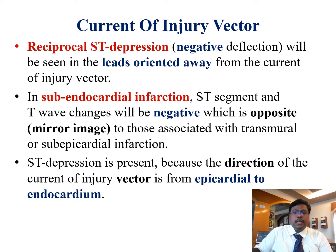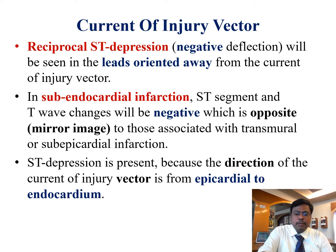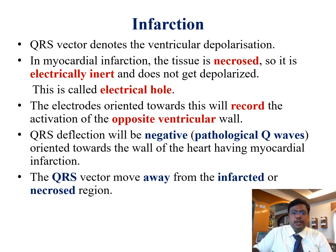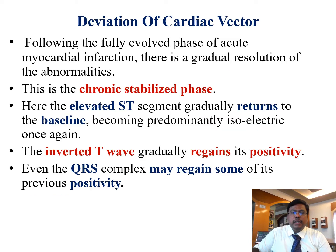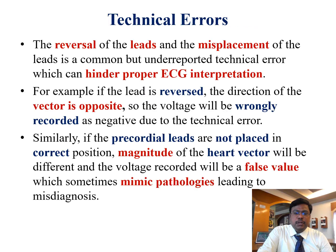Reciprocal ST depression — negative deflection — is seen in leads oriented away from the current of injury vector. In subendocardial infarction, ST segment deviations are negative, opposite to those associated with transmural or subepicardial infarction. ST depression occurs because the direction of the current of injury vector changes from epicardial to endocardium. In myocardial infarction, necrosed tissue is electrically inert and does not depolarize — this is the electrical hole. Electrodes oriented towards this region record activation of the opposite ventricular wall, resulting in negative QRS deflection. The QRS vector moves away from the infarcted region. In the chronic stabilized phase, elevated ST segments gradually return to isoelectric, inverted T waves gradually regain positivity, and even the QRS complex may regain some positivity.